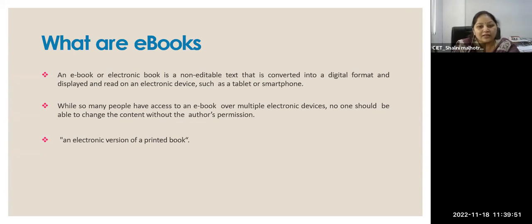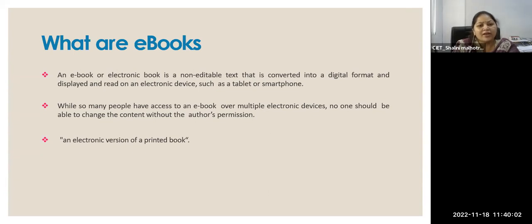What actually ebooks are — they are non-editable text converted to digital format, which we can use on our electronic devices like smartphones, tablets, laptops, and desktops. Physical books have been converted to digital books because education has become digital and everything is online. These digital books are non-editable — like our physical books, we cannot change anything without the author's permission. And we can access multiple digital books on different electronic devices.